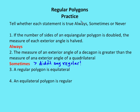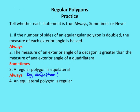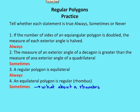Number three: a regular polygon is equilateral. The answer is always — by definition, a regular polygon is both equilateral and equiangular. Number four: an equilateral polygon is regular. The answer is sometimes. Consider a rhombus — it is equilateral, but not regular, because all interior angles in a rhombus are not necessarily congruent.